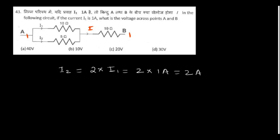Based on the current division rule, I2 should be 2 times I1, so I2 is 2 amps, making the total current I equal to 3 amps. Now what is the total resistance? We have 5 ohm and 10 ohm in parallel. Let's reduce that equivalent resistance.